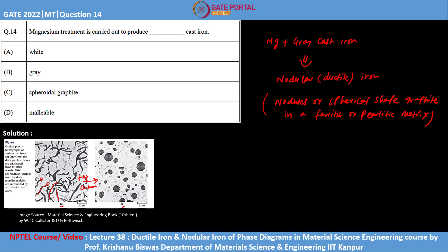In order to improve the mechanical properties such as ductility and toughness, we have to convert this needle-like shape into a spherical shape graphite. This is possible if you add magnesium or cerium to the gray cast iron.